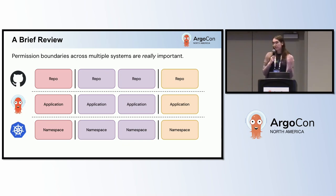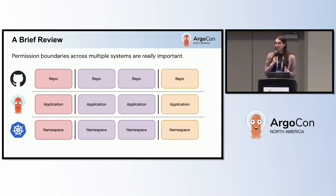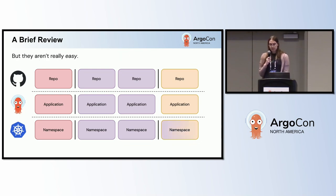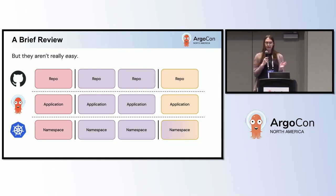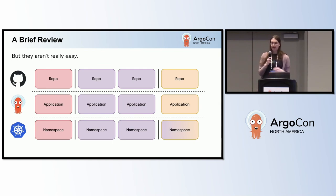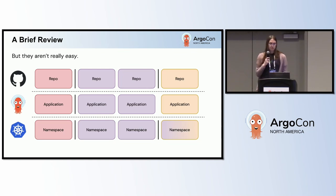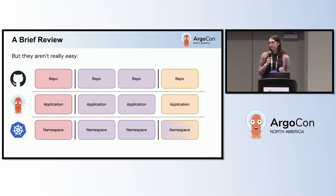Managing these is really important, and keeping them in sync across multiple systems is also important. For example, if we broke the permission boundaries in Argo CD, you might expect that allows teams to hijack someone else's Argo CD. And that's true, but it also cascades into other systems — a misconfigured app project would allow teams to deploy into another team's Kubernetes namespace.